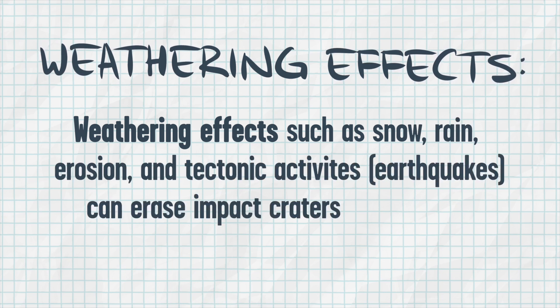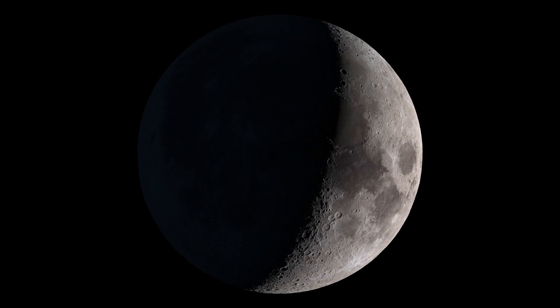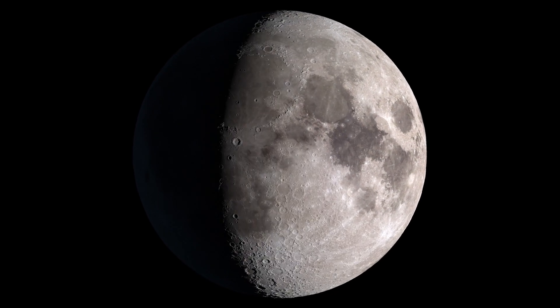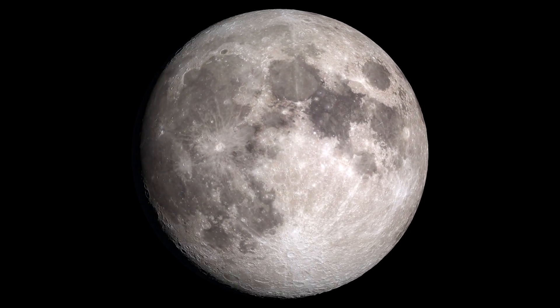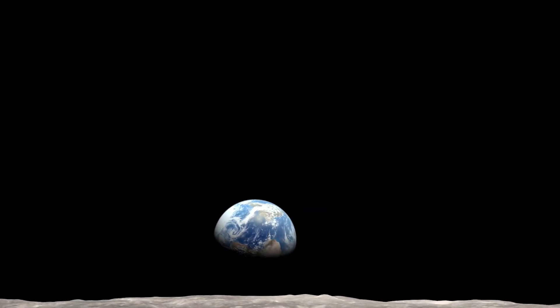The Earth has a lot of weathering effects, like snow, rain, erosion, tectonic activities. So it erases a lot of the older impact craters, making it a lot harder to go back in history and find all the craters on the Earth. Because the Moon doesn't have weathering activities, nothing gets erased on the surface of the Moon. So the Moon is a great time capsule for every event that's ever happened on the Moon, or anything around the Moon, which includes our Earth.